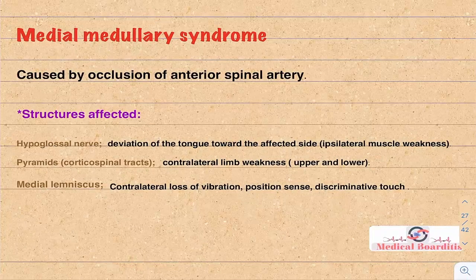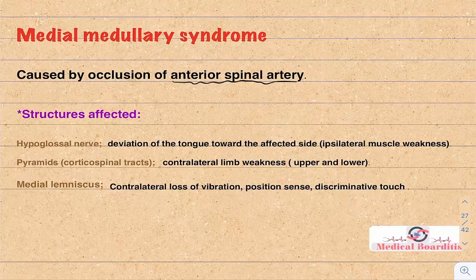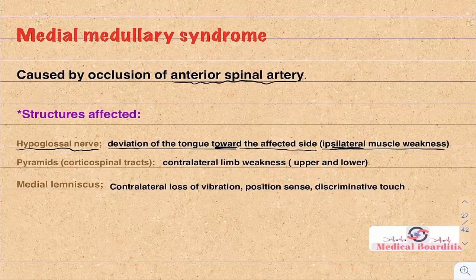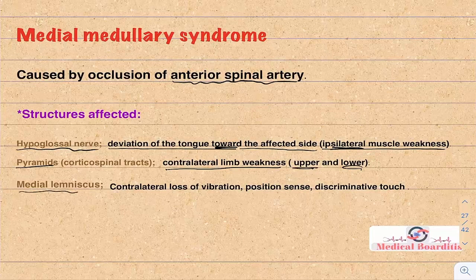Medial medullary syndrome results from occlusion of the anterior spinal artery. Structures affected include the hypoglossal nucleus — causing ipsilateral tongue muscle weakness with deviation toward the affected side (lower motor neuron lesion); the pyramids — causing contralateral limb weakness, upper and lower; and the medial lemniscus — causing contralateral loss of vibration, position sense, and discriminative touch.